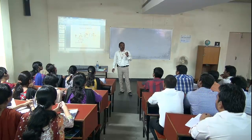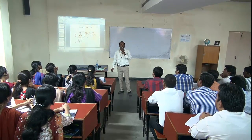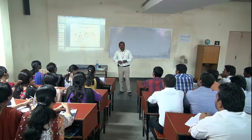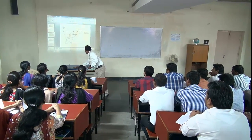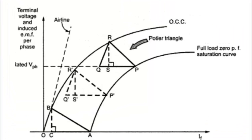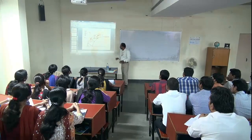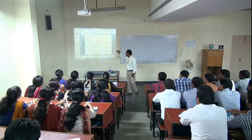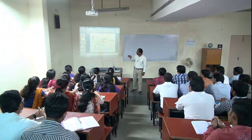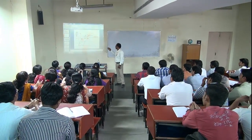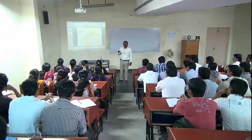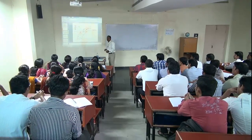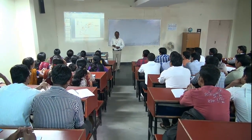By varying the field current using the potential divider, different open circuit voltages are obtained. A graph is drawn between field current on the x-axis and open circuit voltage on the y-axis. This graph is called the OCC — the Open Circuit Characteristic. This completes the open circuit test.